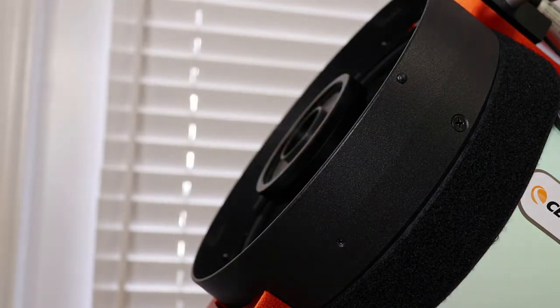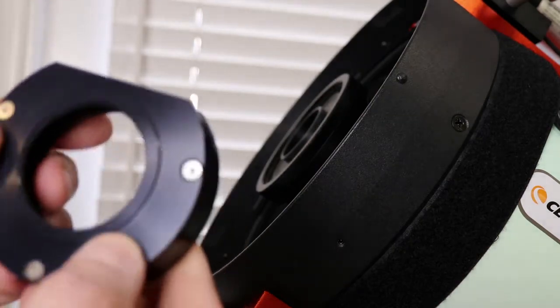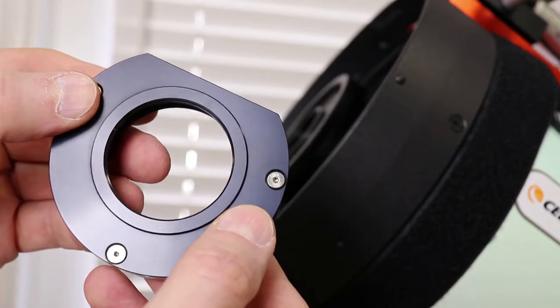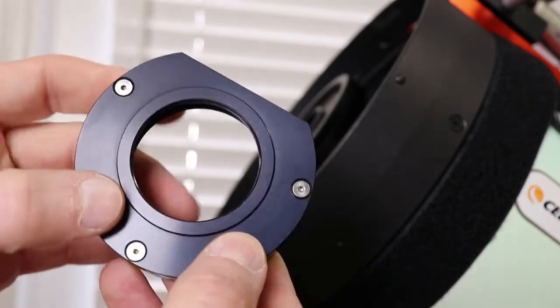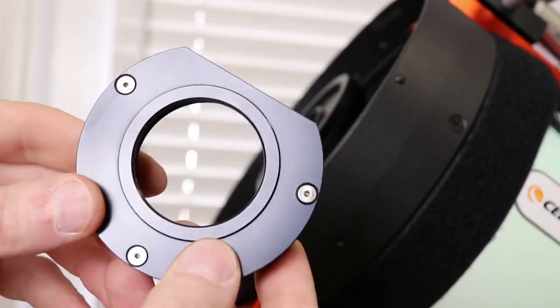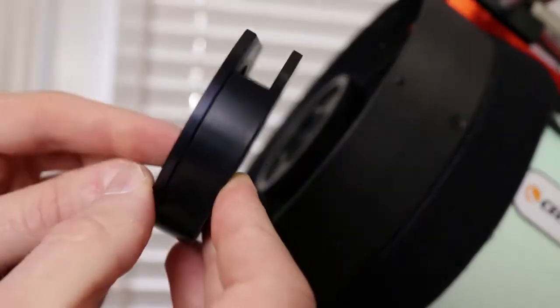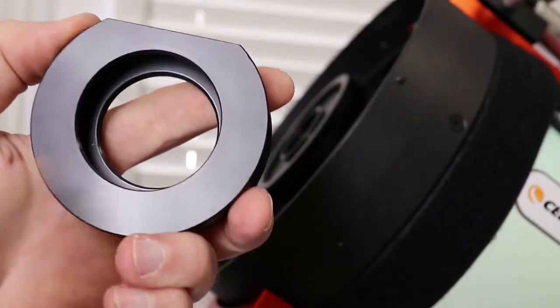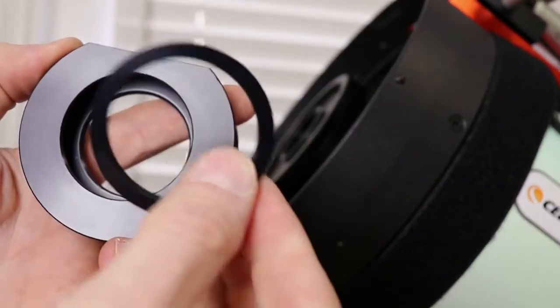So what Starzona did was they took the flange on the front of their drawer, at least I think this is what they did, and they used a different flange which has the female M42 threads which will go towards your camera on this side.